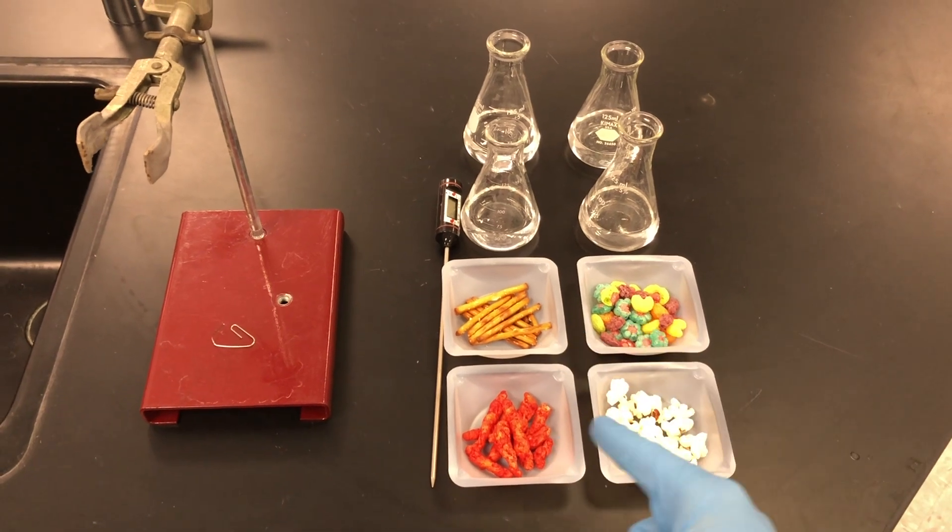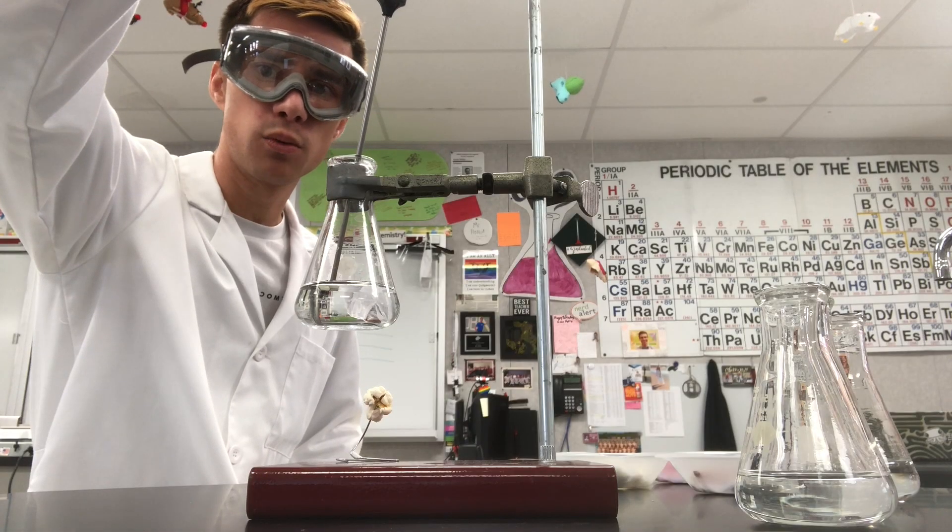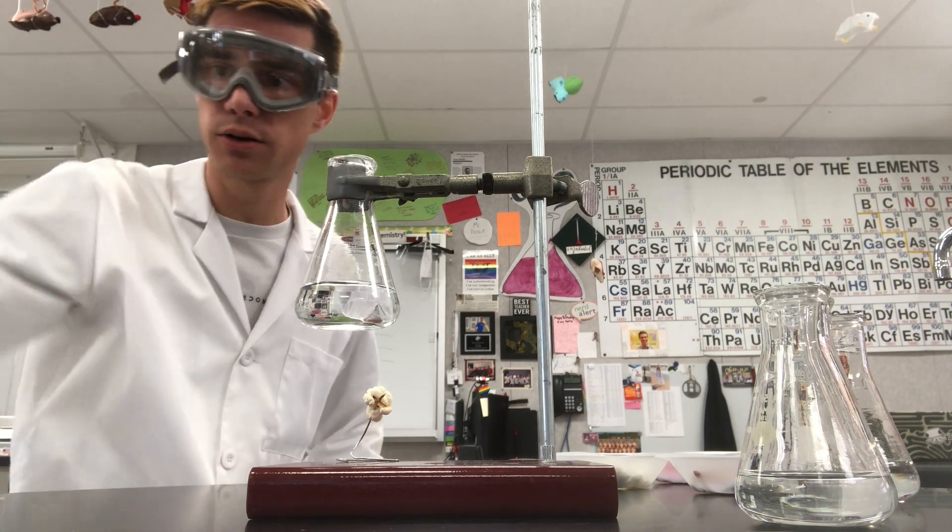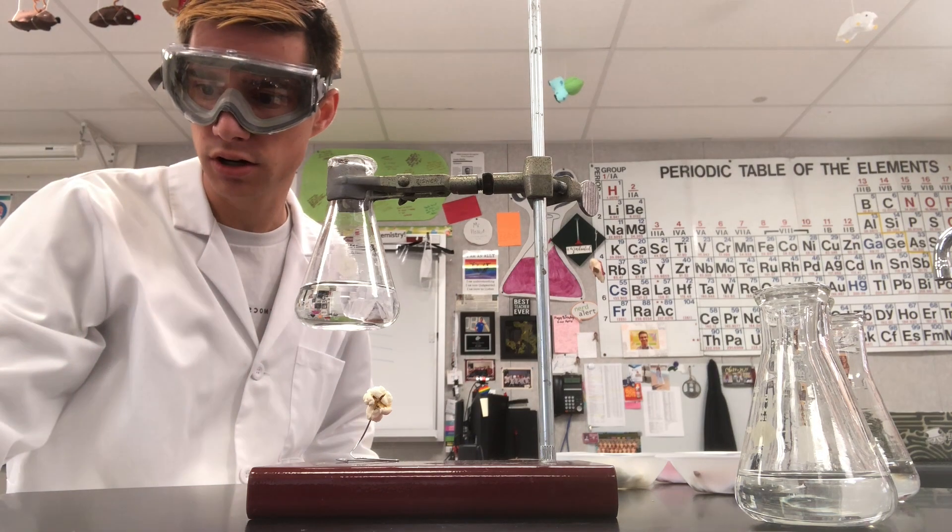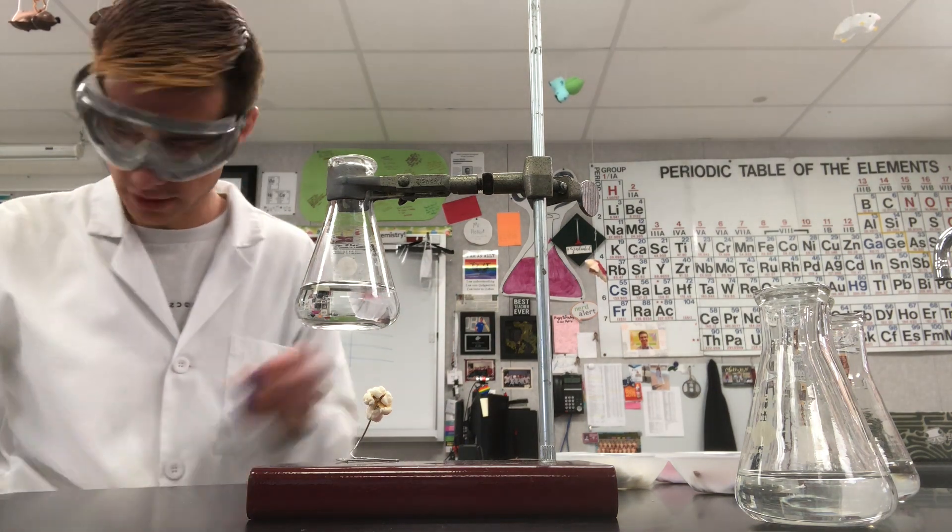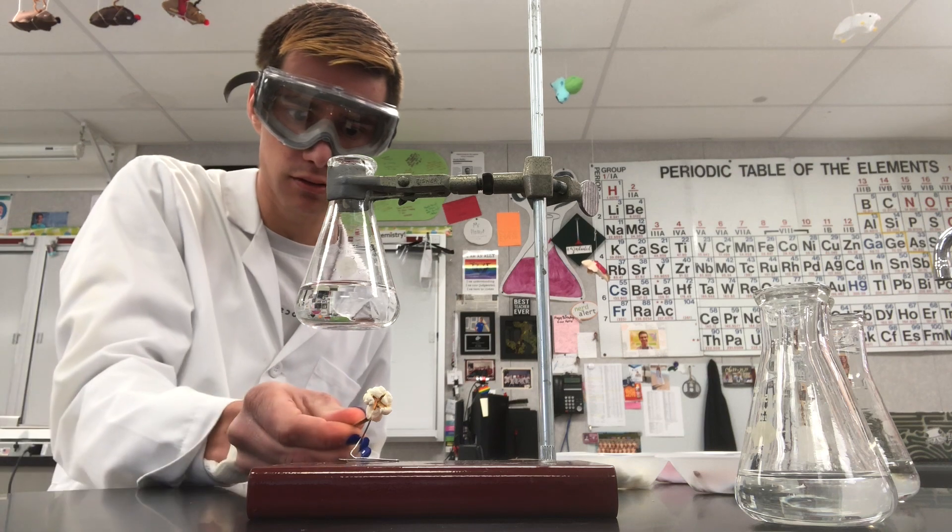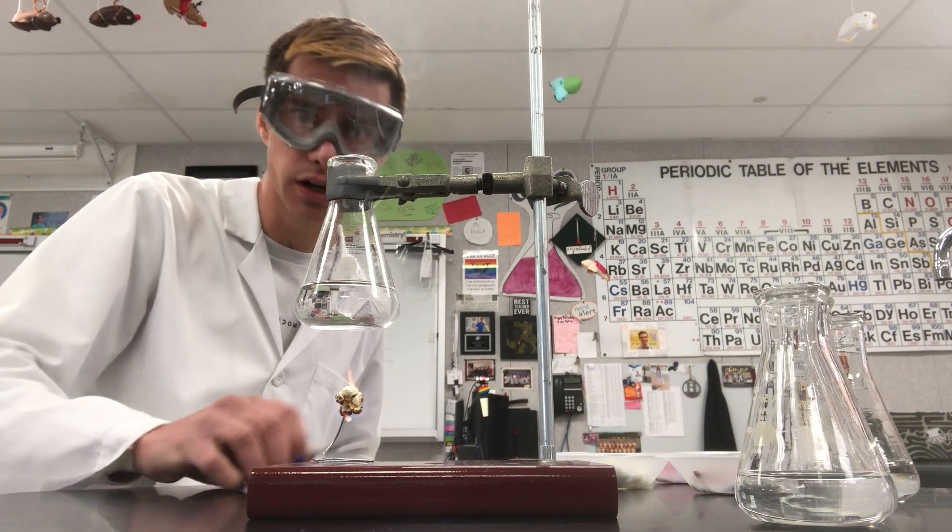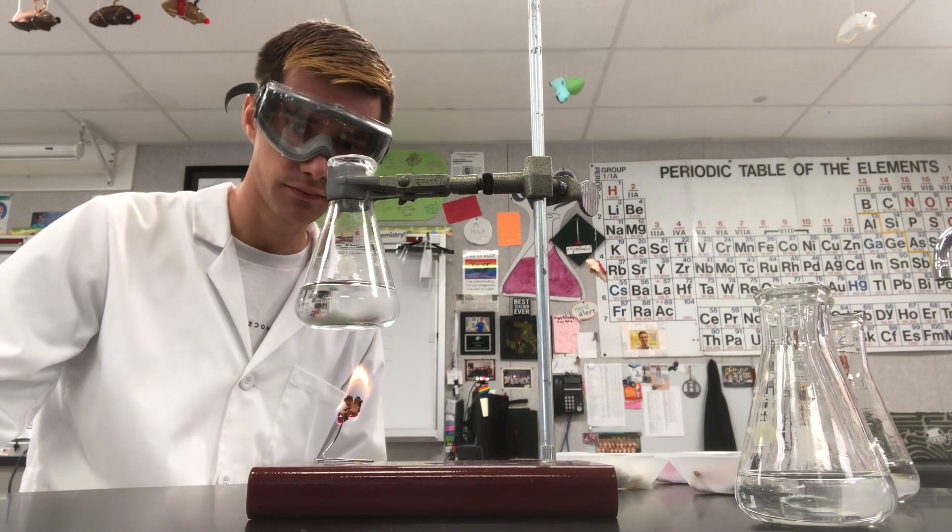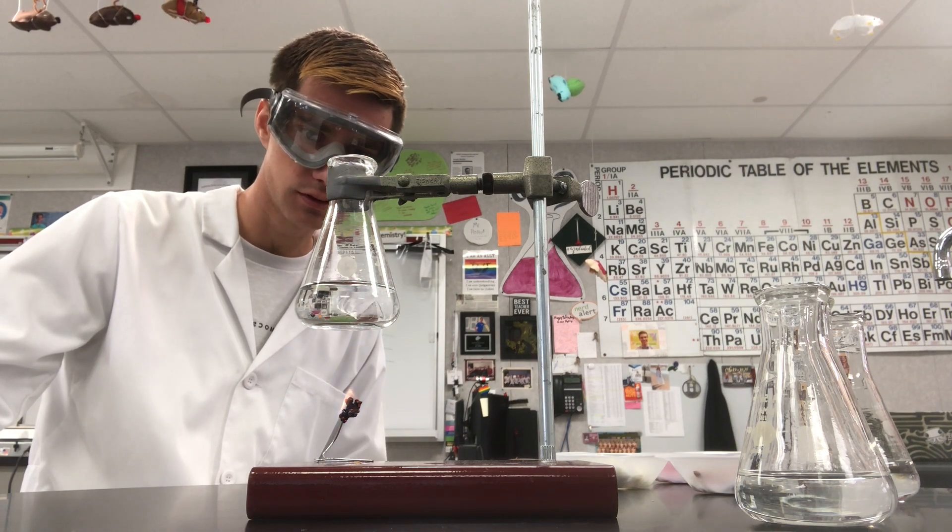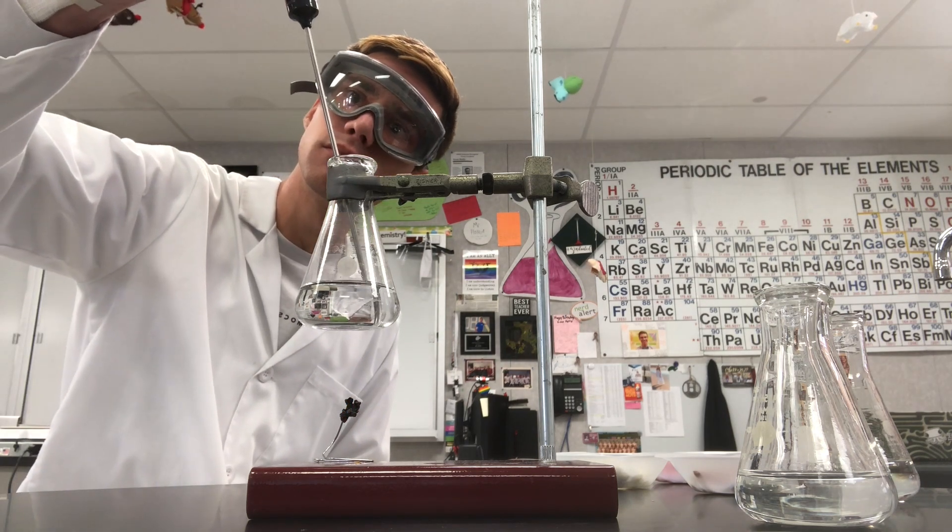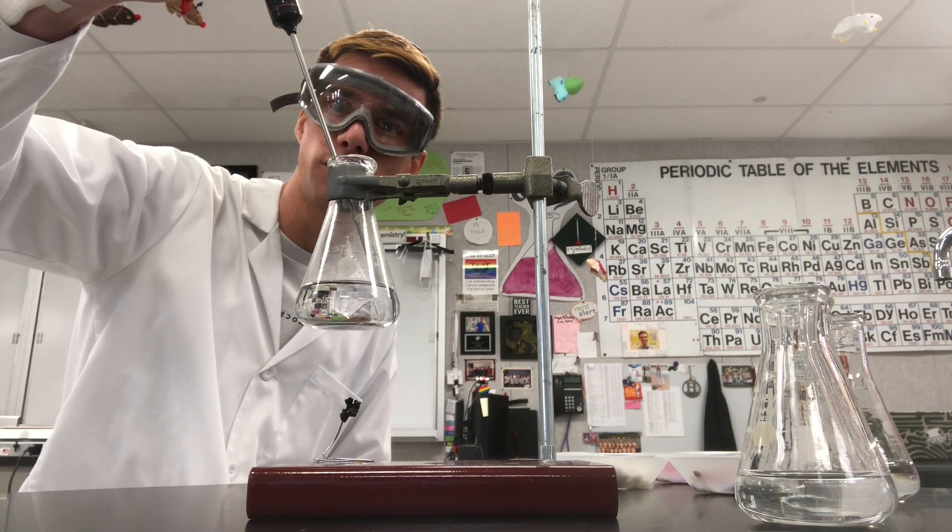All right, trial number one with popcorn. The initial temperature of the water is 19.9 degrees Celsius. I'm going to move the thermometer—it's not very good to have a thermometer right next to an open flame. There we go. 24.4 degrees. It's still going up a little. So we went up by about four and a half degrees.